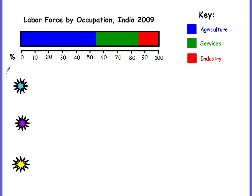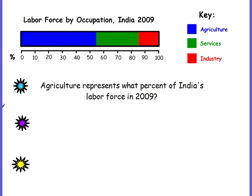Sometimes percent bar graphs are displayed horizontally. We have a key: blue represents agriculture, green represents services, and red is industry. This shows the labor force by occupation in India in 2009. The numerical axis represents percent, going by 10%. Question: agriculture represents what percent of India's labor force in 2009? Agriculture is the bright blue, going from 0 to halfway between 50 and 60, which is 55%. So the answer is 55%.